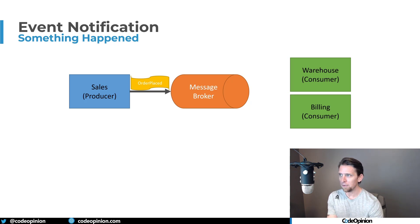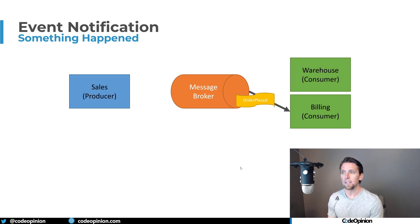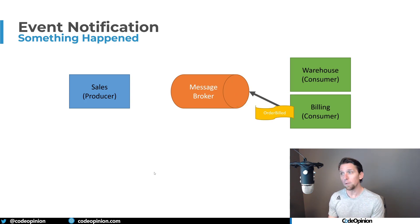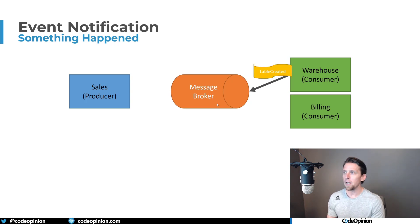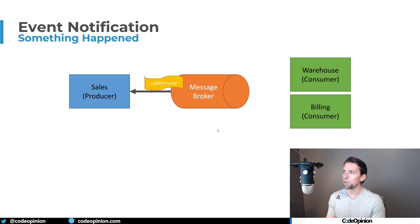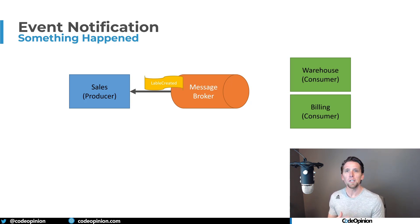For example, sales publishes an order-placed event to the message broker. Billing picks that up and, since it already has the billing information, creates an invoice or charges the customer. Once billing does that, it publishes an order-billed event to the message broker. The warehouse picks up that order-billed event and says, okay, we're good to go — the order's been placed, the customer's been billed, we can ship it out and create a shipping label. It publishes a label-created event, and sales picks that up to know the order is processing and in a good state. This is event choreography — using events purely for workflow, not passing around state.